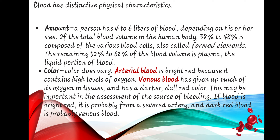Blood can also be characterized by its color, which does vary. Arterial blood is bright red because it contains high levels of oxygen. Venous blood has given up much of its oxygen to the tissues and has a darker, dull red color. This may be important in the assessment of the source of bleeding—if blood is bright red, it is probably from a severed artery.